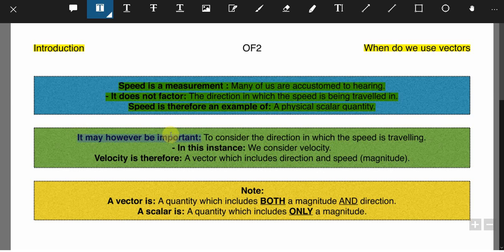However, it may be important to consider the direction in which the speed is traveling because if you're trying to track a car, whether it's going 50 miles an hour north or 50 miles an hour west, knowing the direction is crucial.